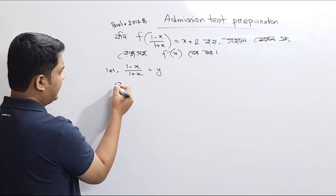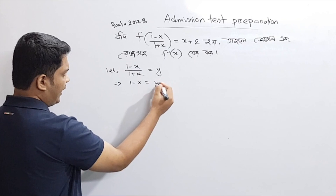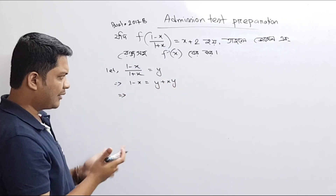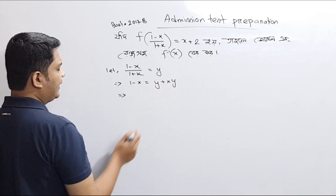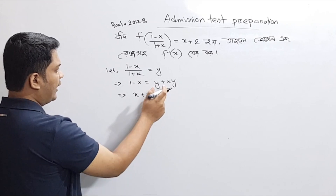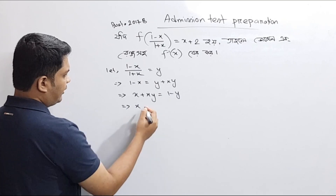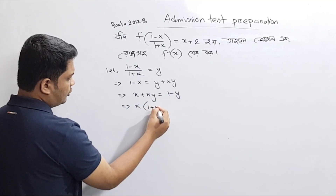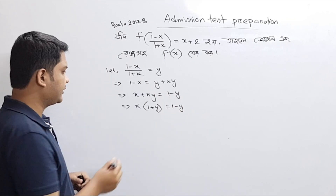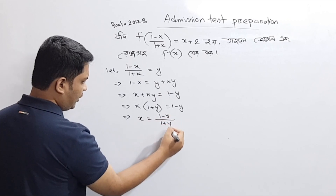Let's write: 1 minus x is equal to y times (1 plus x). This implies x plus xy is equal to 1 minus y, so x is equal to 1 minus y divided by 1 plus y.